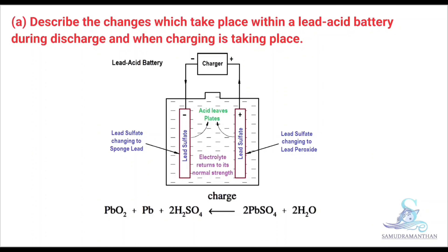This is the diagram of a lead acid battery being charged. On the negative terminal, lead sulphate is changing to sponge lead. On the positive terminal, lead sulphate is changing to lead peroxide. Acid is leaving the plates, the electrolyte is returning to its normal strength, and the reaction is reversed.